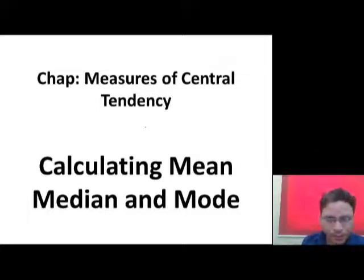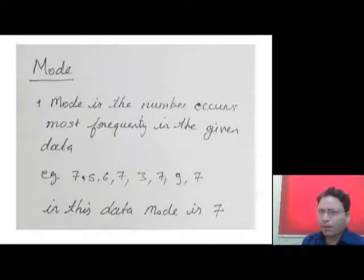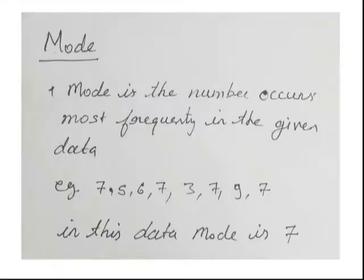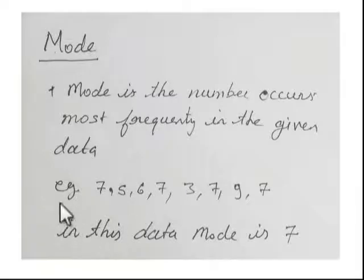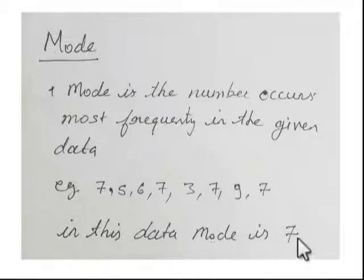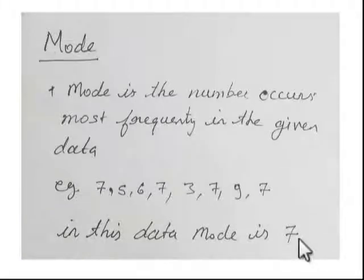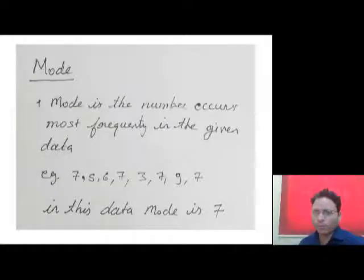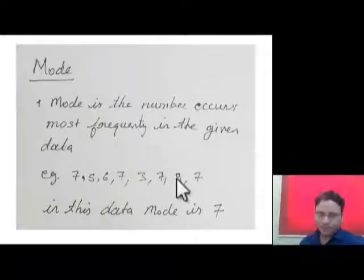Mode is nothing but the number which occurs most frequently in a given series. As you can see in this example, the most occurred number in this series is number seven — it appears four times. So this number we call the mode for this given data.